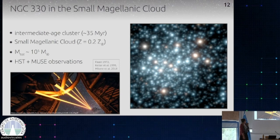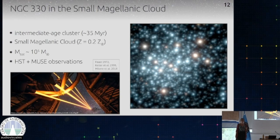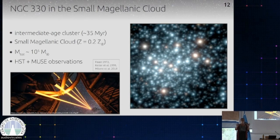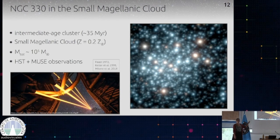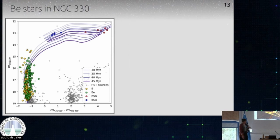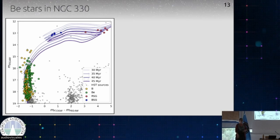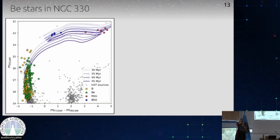We have observations of this cluster with HST and also with MUSE, which is an integral field spectrograph at the VLT. This is an RGB image of the cluster observed with MUSE using three colored channels. If we combine the two datasets, we can make a color-magnitude diagram — basically like a Hertzsprung-Russell diagram using two different HST filters. We can then use the integral field spectroscopy to extract spectra for all of the brightest stars and check: do they show emission lines or not?